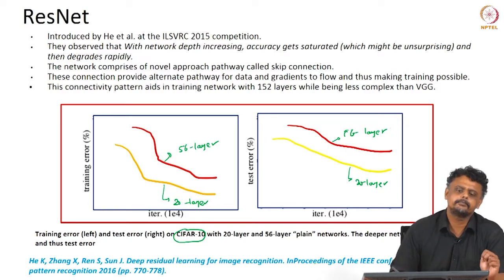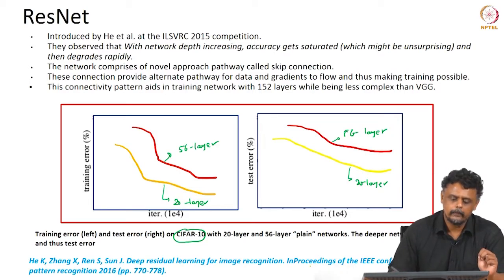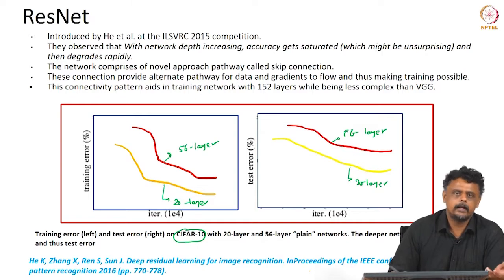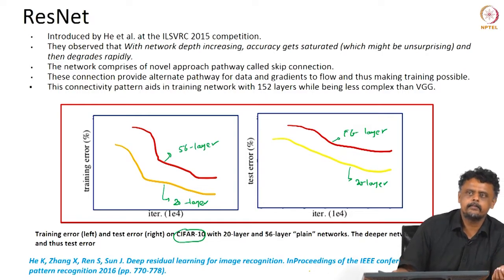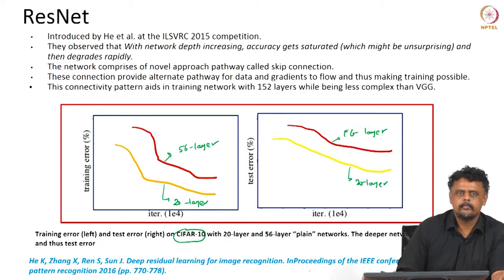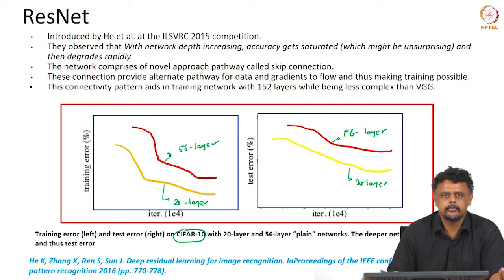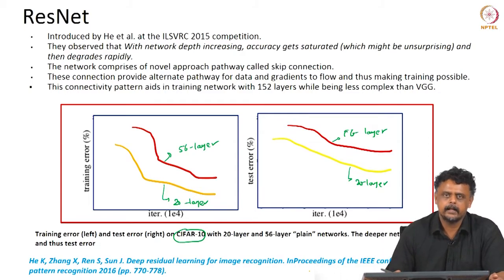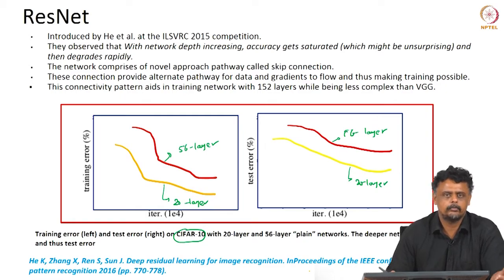So what is the reason behind this? The reason is that there is a problem with the gradient flow. As you go deeper and deeper, the vanishing gradient problem — or exploding gradient problem — is present. This is not alleviated, so it is fundamentally an optimization problem: as you go deeper, optimizing a larger and deeper network becomes harder.